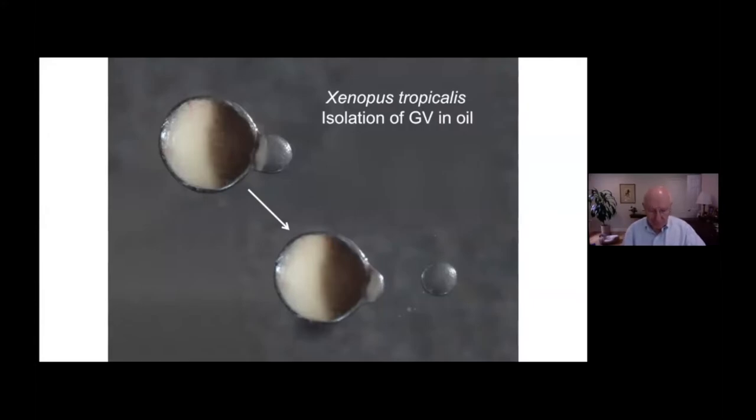This slide shows how easy it is to remove the giant nucleus by poking a hole in the oocyte and squeezing. The nucleus pops out, often completely free of yolk, as in this example.